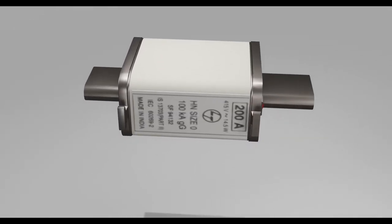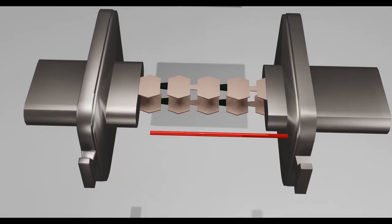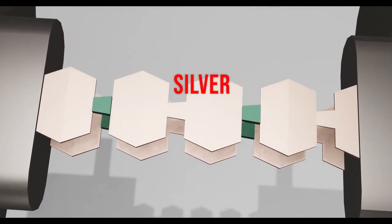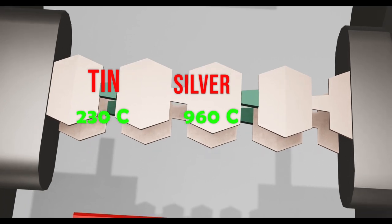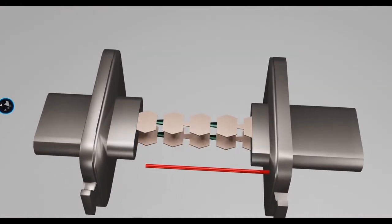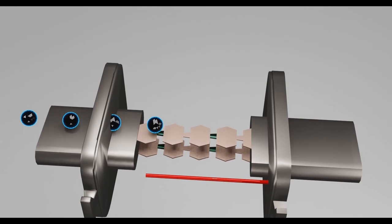us discuss the working of HRC fuse. As we discussed, the fuse element is made up of two materials, silver and tin. Silver has a melting point of 960 degrees Celsius, and tin has a melting point of 230 degrees Celsius. Whenever normal or rated current flows through the HRC fuse, the heat developed in